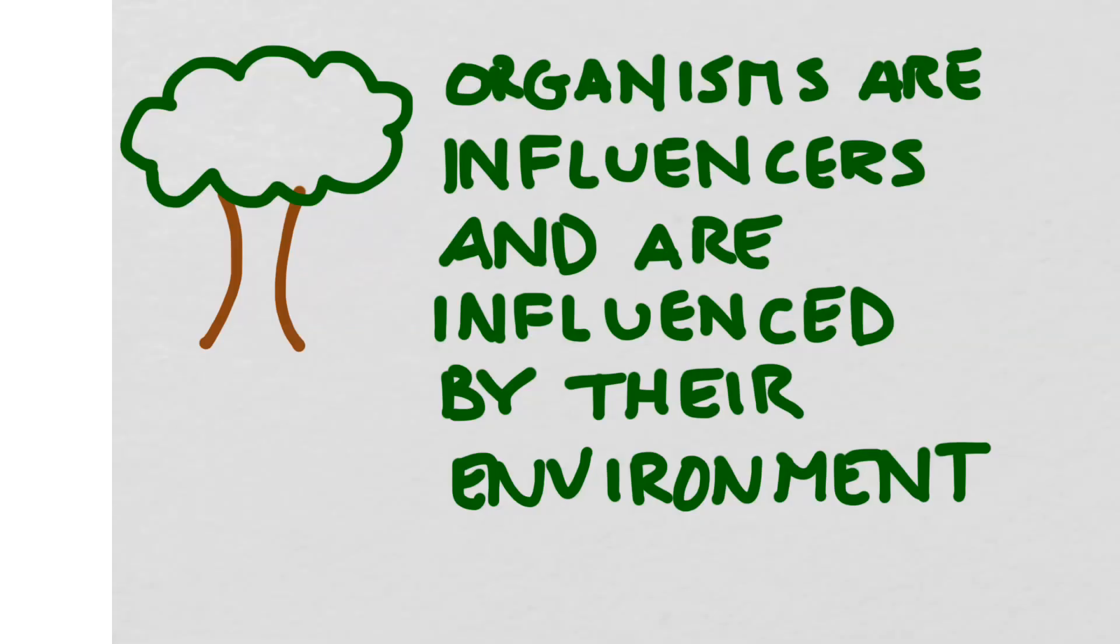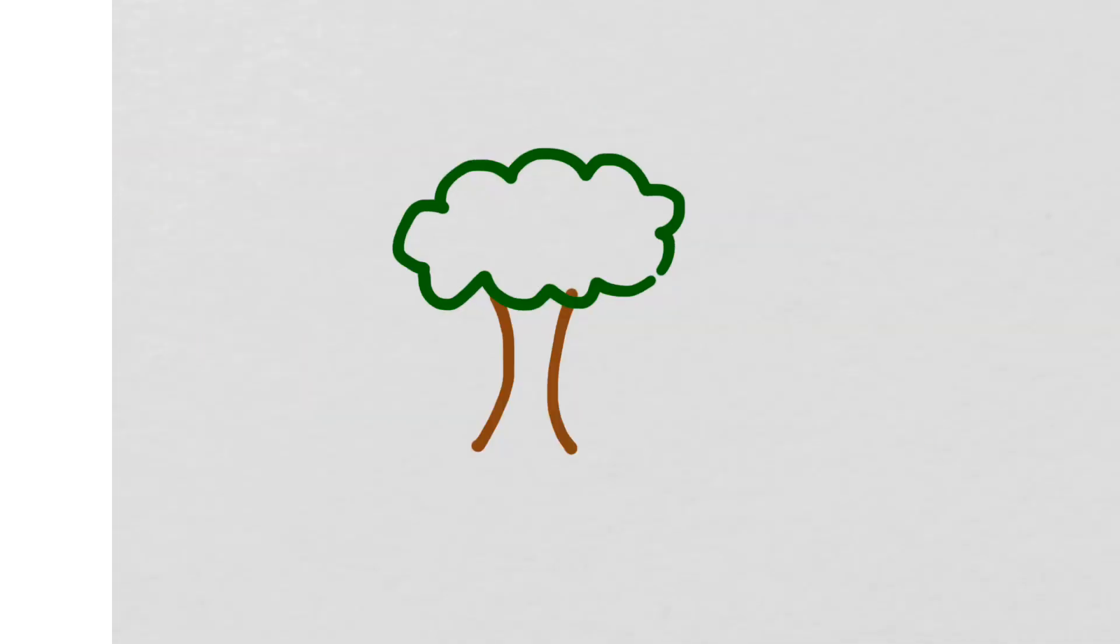To start our discussion of cycles, it's important to remember that organisms are influencers on their environment and they are also influenced by their environment. If I look at the really easy example of a tree, it's going to be influenced by its environment in a few ways.